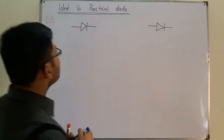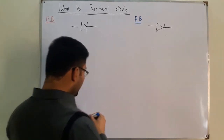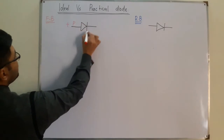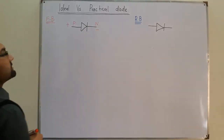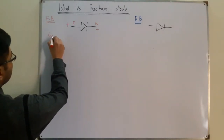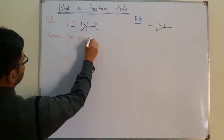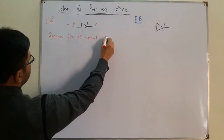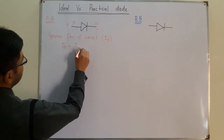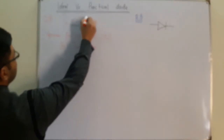The red color represents forward bias (FB) and the blue color represents reverse bias (RB). In forward bias, the P side is connected to the positive terminal of the battery and the N side is connected to the negative terminal. This results in a generous flow of current ID, where ID equals I-majority minus I-minority.